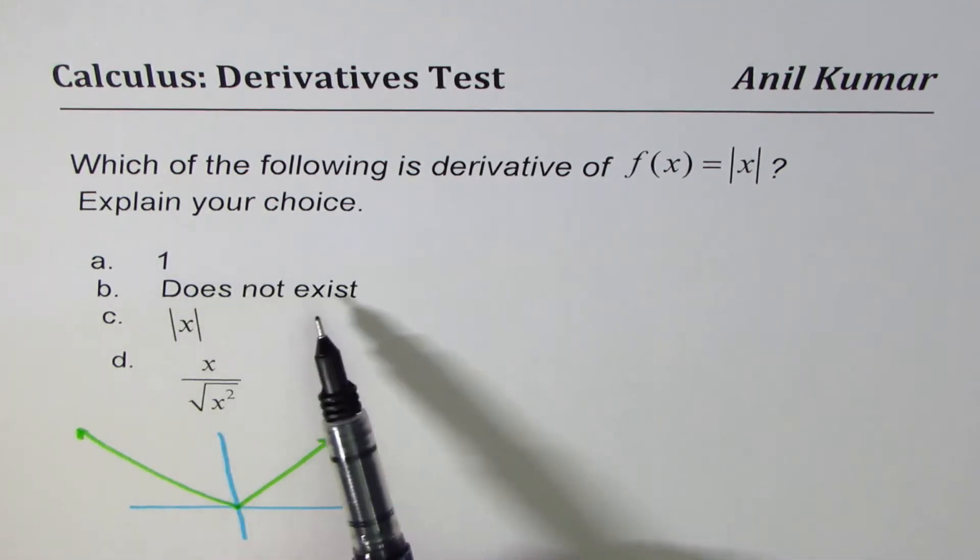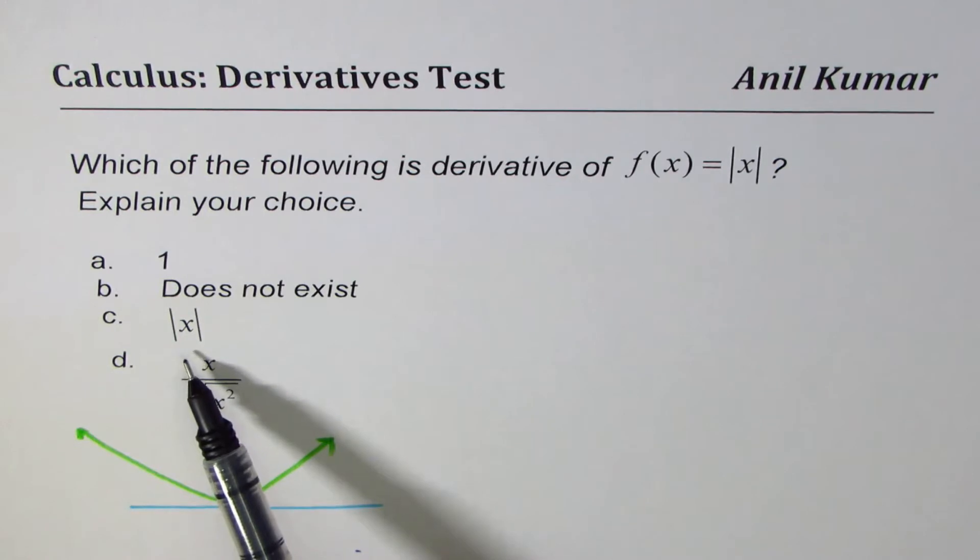The choice is 1, does not exist, absolute value of x, and x over square root x squared. Now, when x is 0, the derivative is not defined.